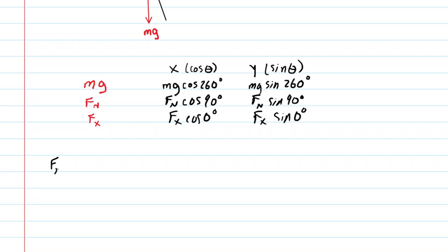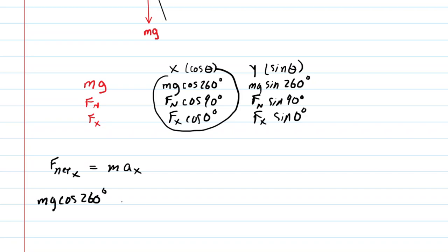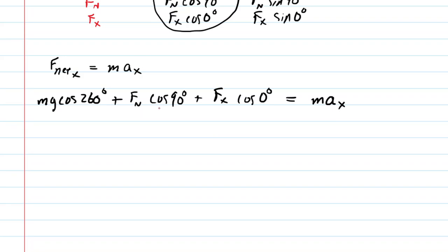For the x-direction, f-net in x equals mass times acceleration in x. With three forces, we add them: mg times cosine of 260 degrees, plus f sub n times cosine of 90 degrees, plus f sub x times cosine of zero degrees, all equal to mass times acceleration in x. Cosine of 90 degrees is zero, so the f_n term cancels out. Cosine of zero degrees is one, so f sub x times one is just f sub x.